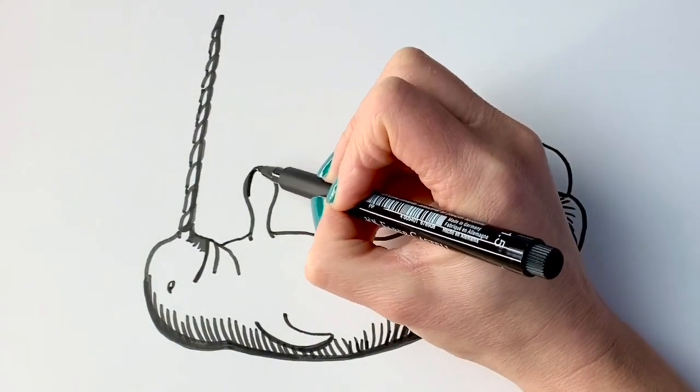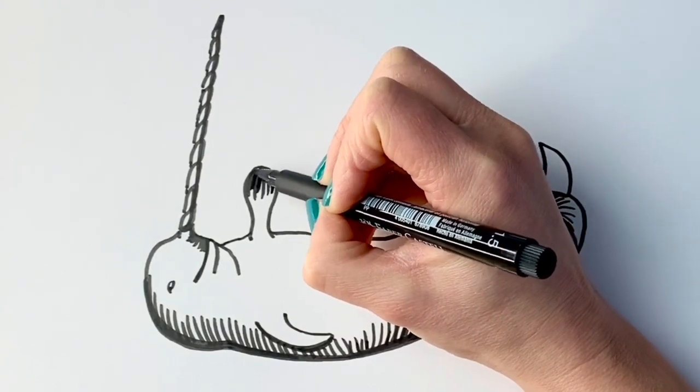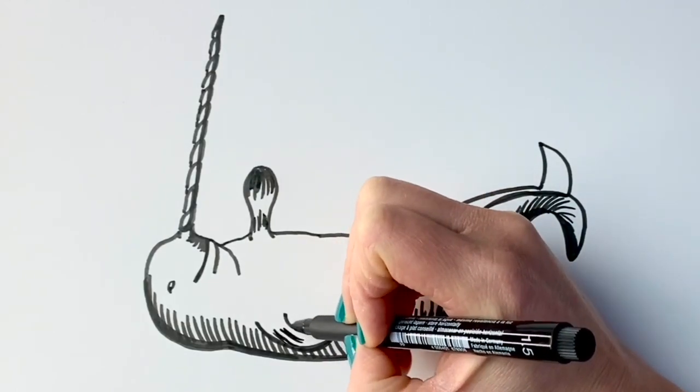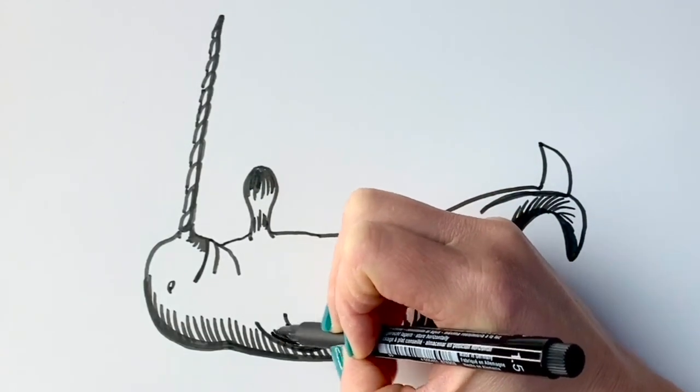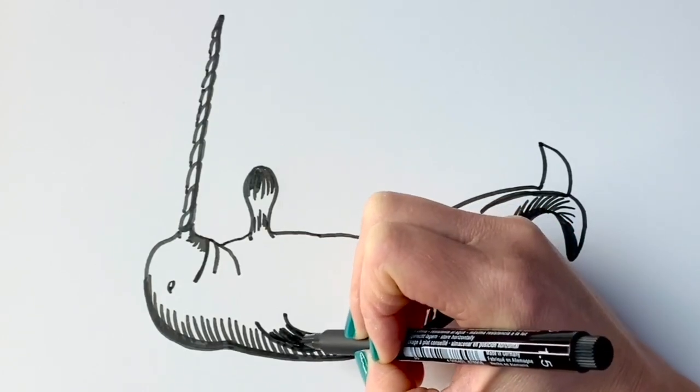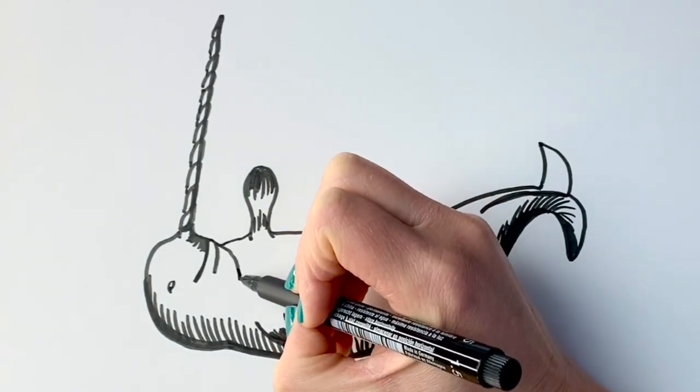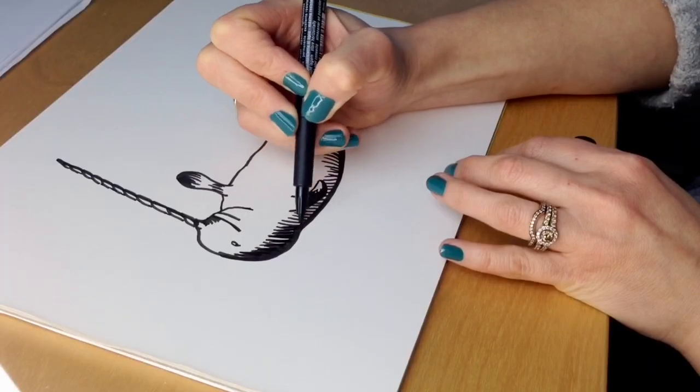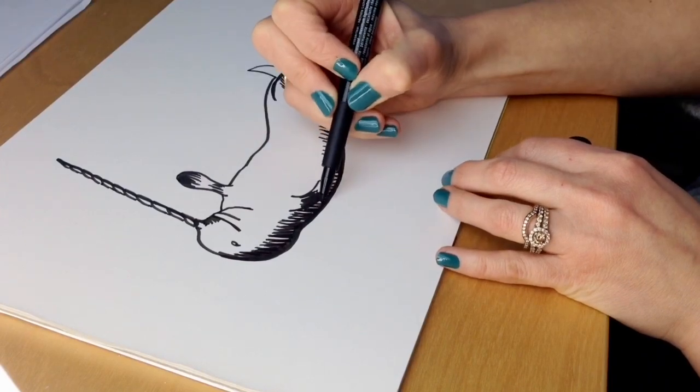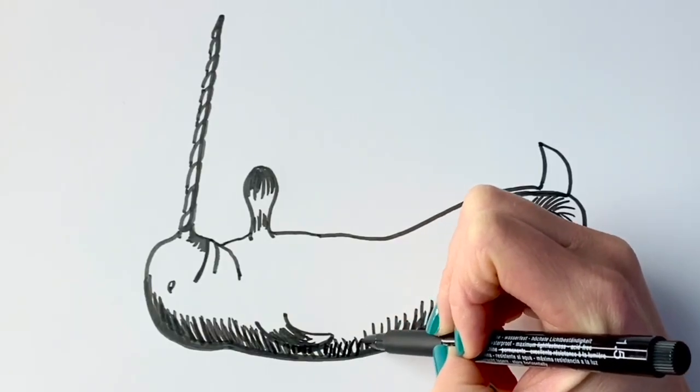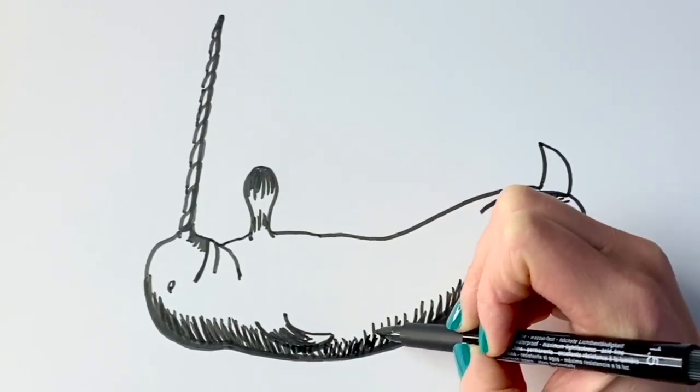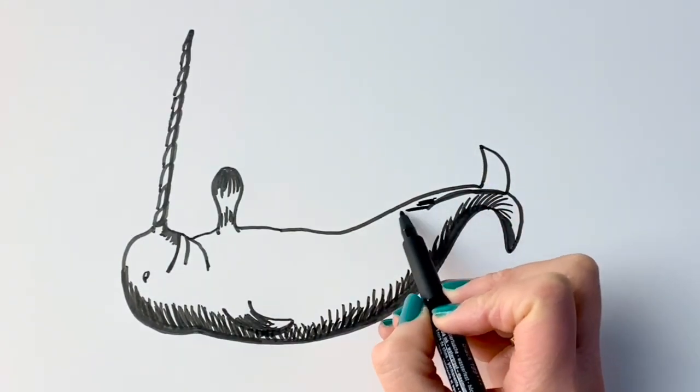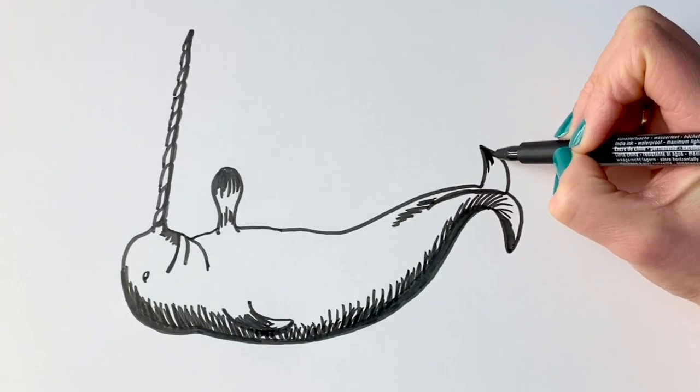Now, a little bit of shadow on this fin along the bottom, and on this one. I'm just going to go over the shadow here as well. And then, last but not least, a tiny bit there.